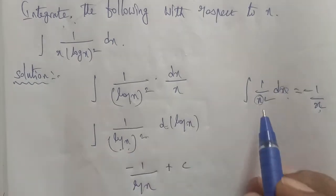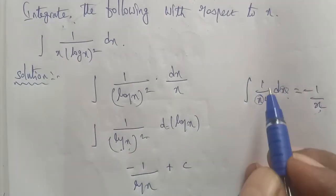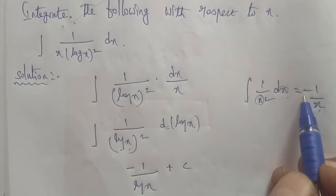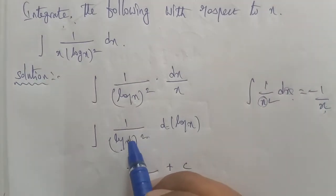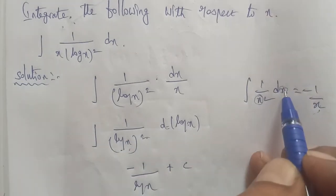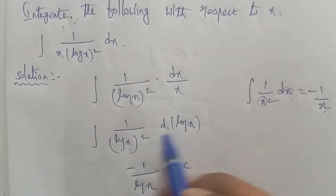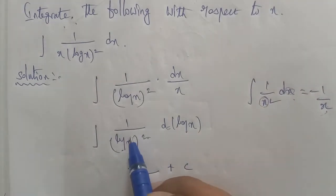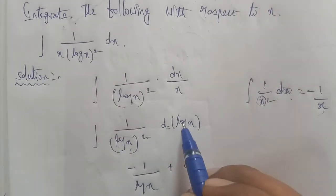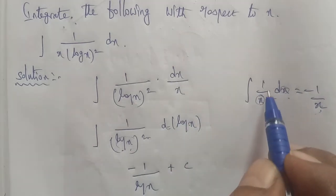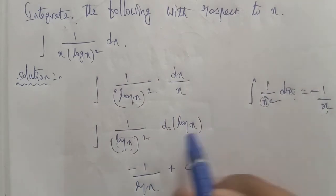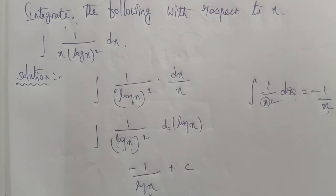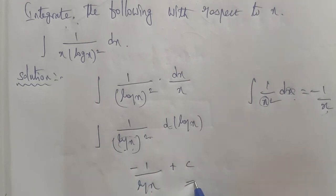So the answer is minus 1 by log x plus c. We can verify: the integration of 1 by x squared dx gives minus 1 by x, and here with (log x) whole power square the answer is minus 1 by log x plus c. That is the final answer.